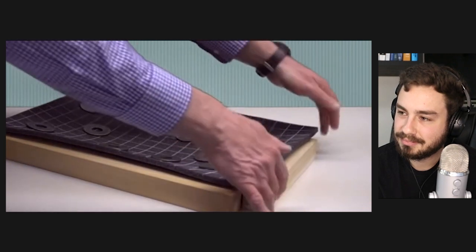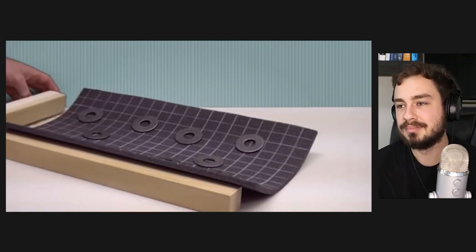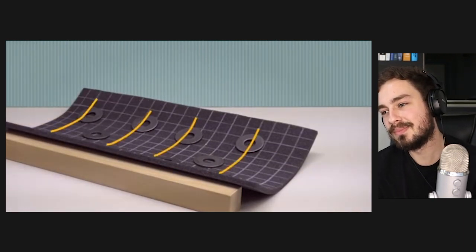If we remove one of the end supports, the plate deflects like this, and removing the other end support produces this result. Notice how bending occurs in only one direction.